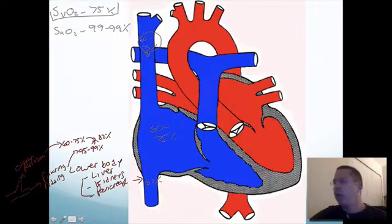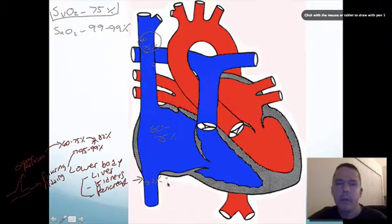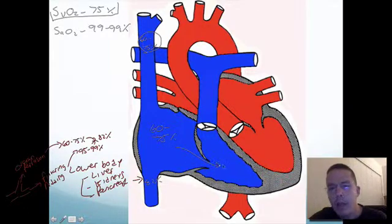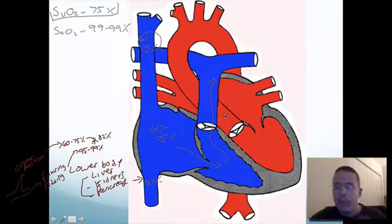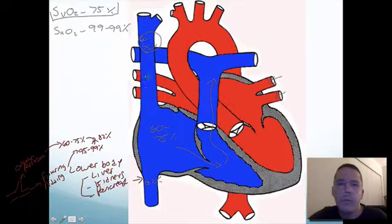As the blood travels from the superior and inferior vena cava into the right atrium, it'll go through the tricuspid valve into the right ventricle, the oxygen saturation will stay about 60 to 75%, and then it will go out to the lungs to be oxygenated and the CO2 will be dumped off. It will then come back to the heart via the four pulmonary veins, one, two, three, four, and then to the left atrium.